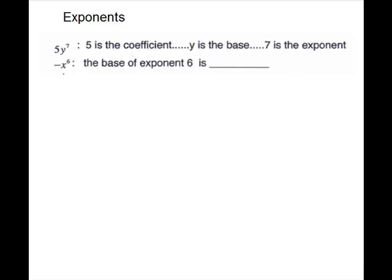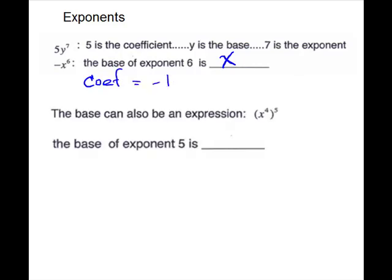In our second expression, the base of the exponent 6 is just the x. This negative is part of the coefficient in front, so the base is x and the coefficient is negative 1. The base can also be an expression — the base of the exponent 5 is this whole thing, x to the 4th.